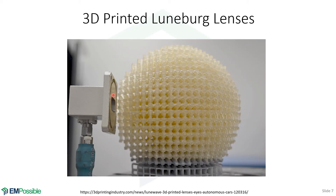Here we see a flat, blunt waveguide, which of course would radiate in a broad range of angles. But if we place it against the edge of a Luneberg lens, the beam comes out collimated on the other side and produces a relatively directive beam.